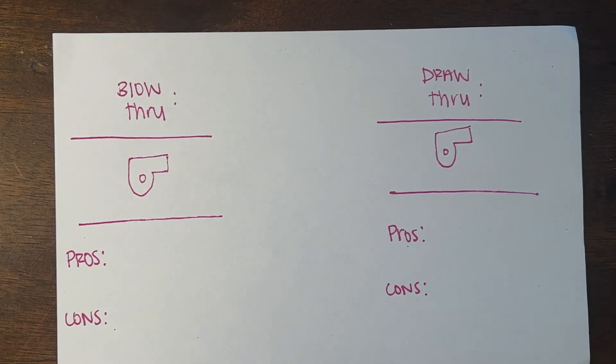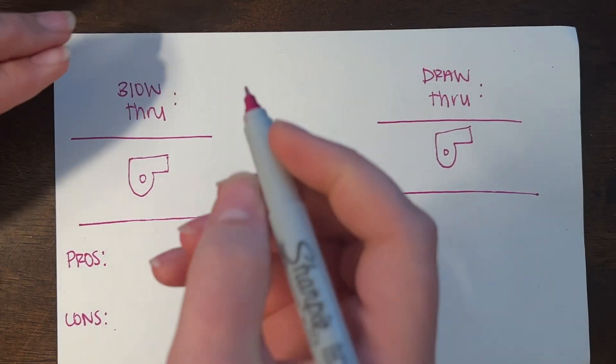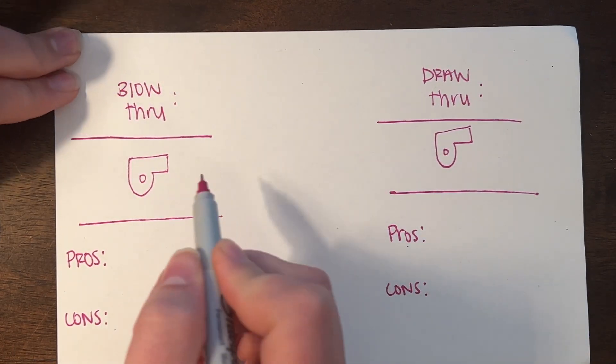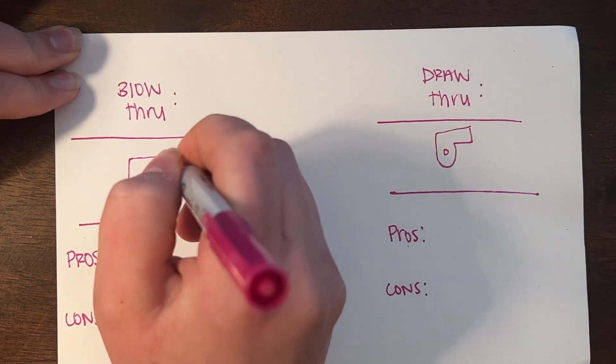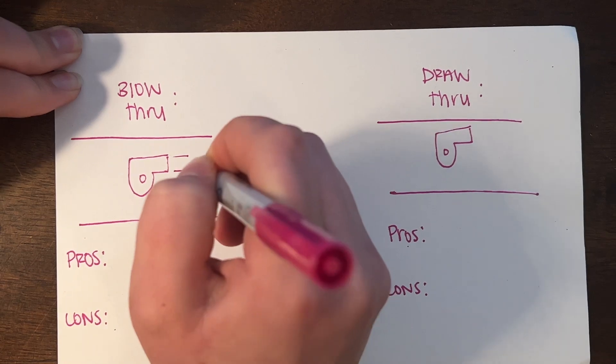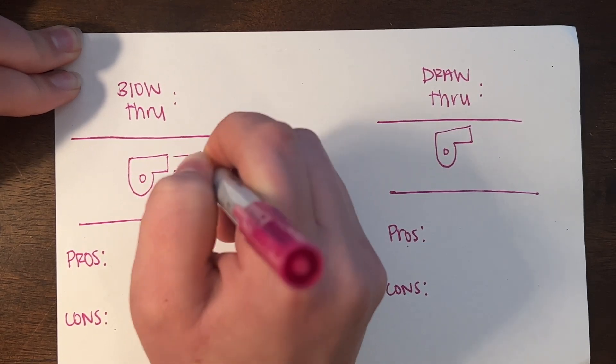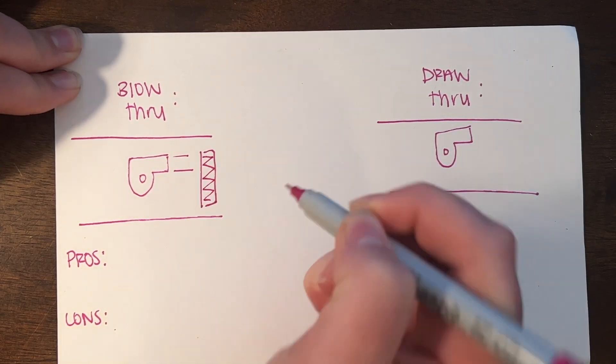Understanding the difference in terminology in air handling units between blow through and draw through units. A blow through unit is basically a unit with your fan blowing air through a cooling coil.